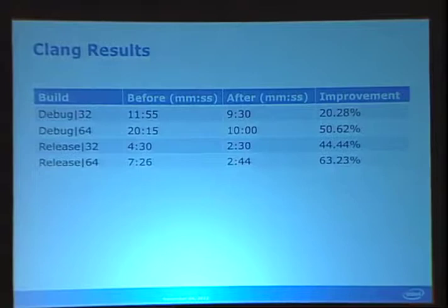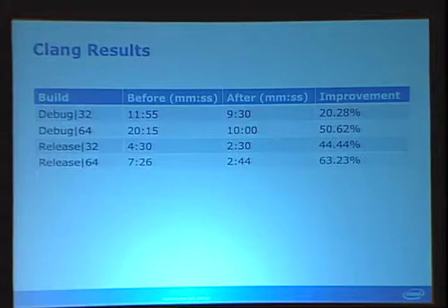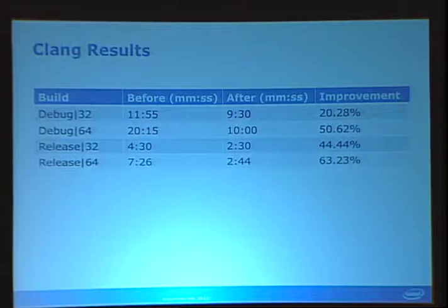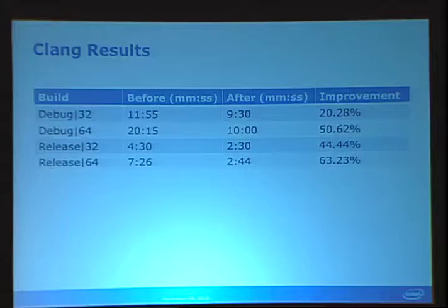To show some results, we built Clang 3.0 on the platform we use, targeting Windows and Visual Studio. Before we did the dependency analysis, we had very large build times on our system — 10 minutes, 20 minutes — and then release builds are a lot better at four and seven minutes. After doing the dependency analysis, the improvements ranged from 20% up to 63%, which is quite noticeable. That basically allows us to have a continuous integration process where we can build at every check-in and not have to wait for long build times.